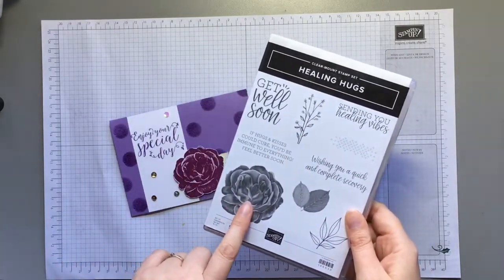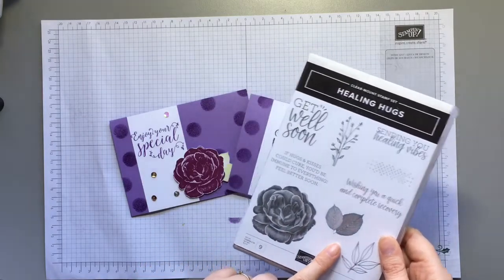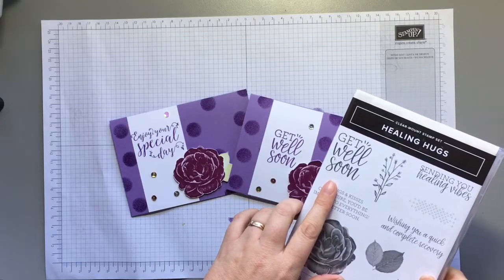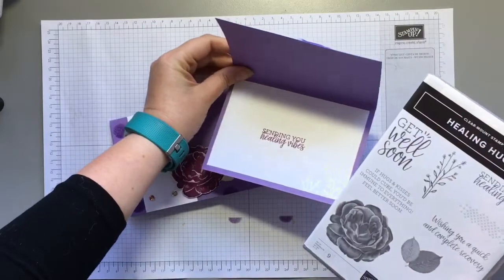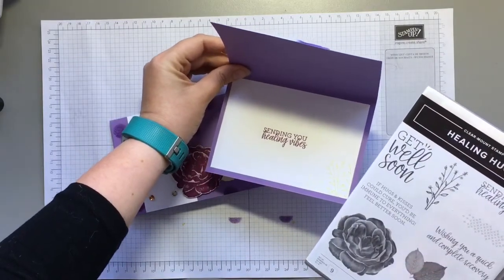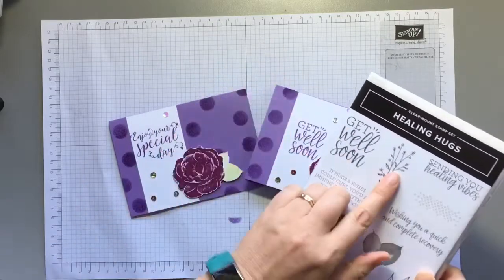I've used the rose from Healing Hugs and the leaf. On the first card here I've used the Get Well Soon sentiment and inside I've stamped Sending You Healing Vibes and also this foliage piece.